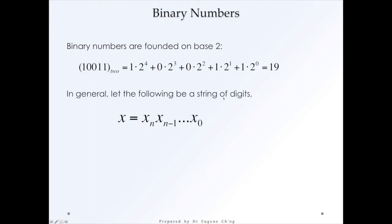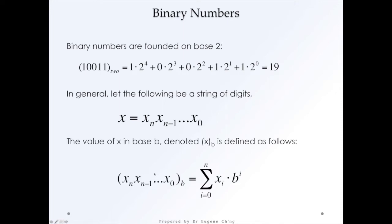In general, let the following be a string of digits from the least significant bit all the way to the most significant bit. The value of x in base b, denoted x_b, is defined using summation notation as the addition of x_i times b to the power of i. As i increments, that's the base exponent incrementing.